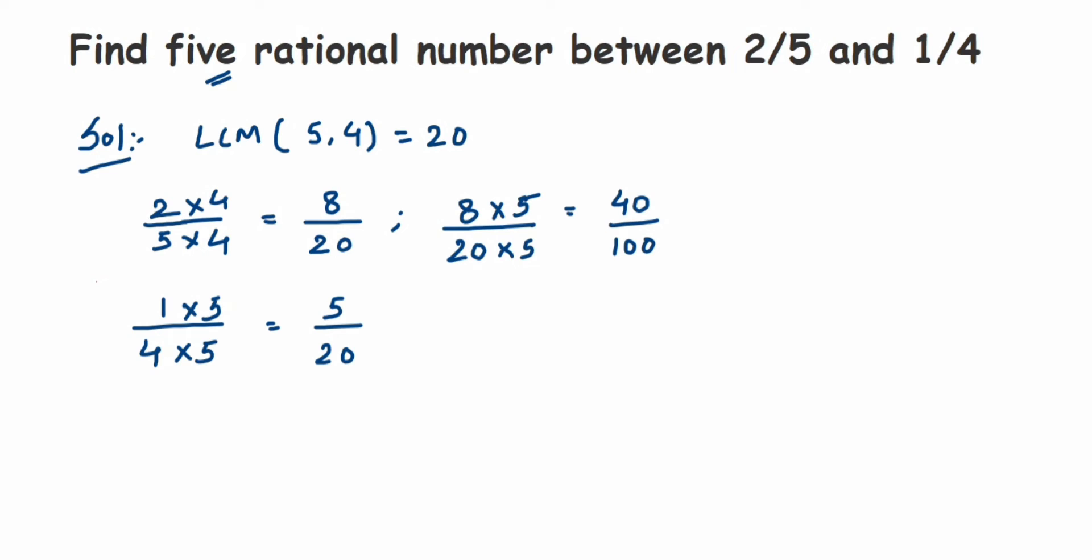Then next, here we have 5 by 20, right? So with 5 by 20 also, you should multiply the numerator and denominator with 5, otherwise denominator will change. So this will be 25 by 100. Now you can see that we got 40 upon 100 and 25 upon 100. And between this 25 to 40, we have many numbers.